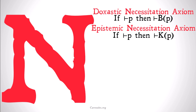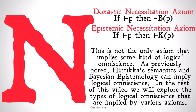The doxastic necessitation axiom and the epistemic necessitation axiom basically say that if P is a truth of logic, or if you can prove P from the system, then you believe P or you know P. This is not the only axiom that's going to imply some kind of logical omniscience. As previously noted, Hintikka semantics and Bayesian epistemology can also imply logical omniscience. In the rest of this video, we're going to explore the types of logical omniscience implied by various axioms.